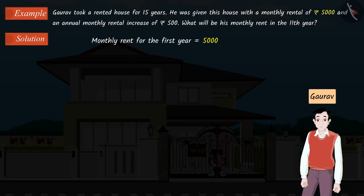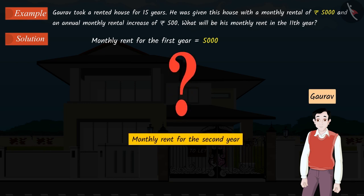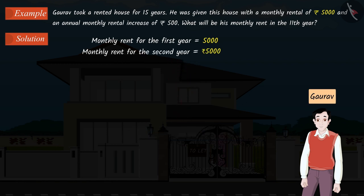The monthly rent for the first year will be Rs. 5000. Can you find the monthly rent for the second year? Well done! It is very easy. We just have to add the annual increase to the monthly rent for the first year. Hence, the monthly rent for the second year will be Rs. 5,500.